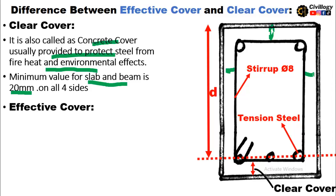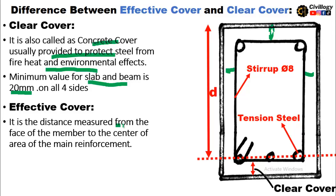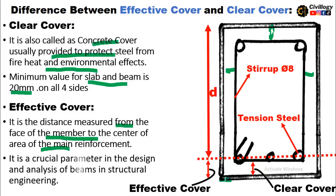Effective cover is defined as the distance measured from the face of the member to the center of the main reinforcement. If this line is passing through the centroid of the tension steel, then the distance between the center of the tension steel and the outer face of the beam is called effective cover. It is a very crucial parameter in the design and analysis of beams in structural engineering.